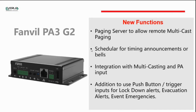The new functions added to the PA3 G2 include the paging server, which allows remote multicast paging access. You dial in and the PA3 reads the caller line ID from your telephone, matches it if it's been allowed to access the unit, then plays a greeting message. You can have different zones, different buildings, different connections, and once you enter your four-digit PIN number you can multicast into the various zones that have been set up.